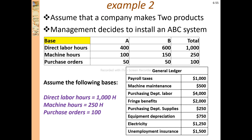A company makes two products, and the management decided to install an ABC Costing system. There are two products: Product A and Product B.